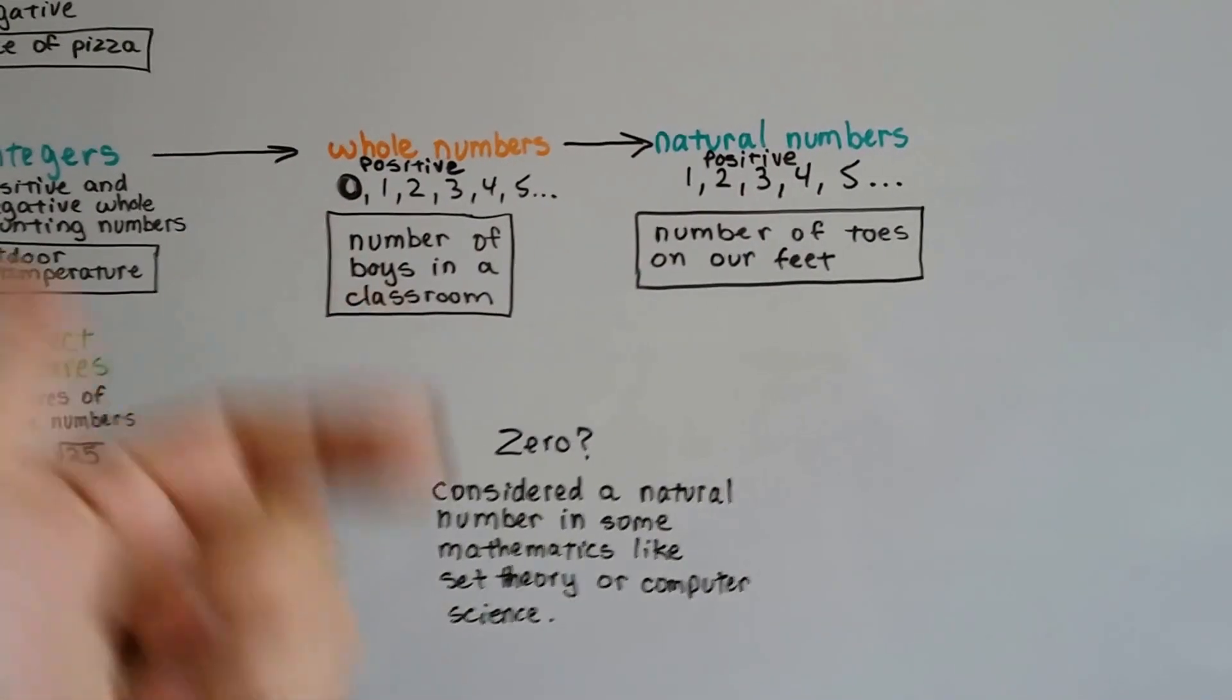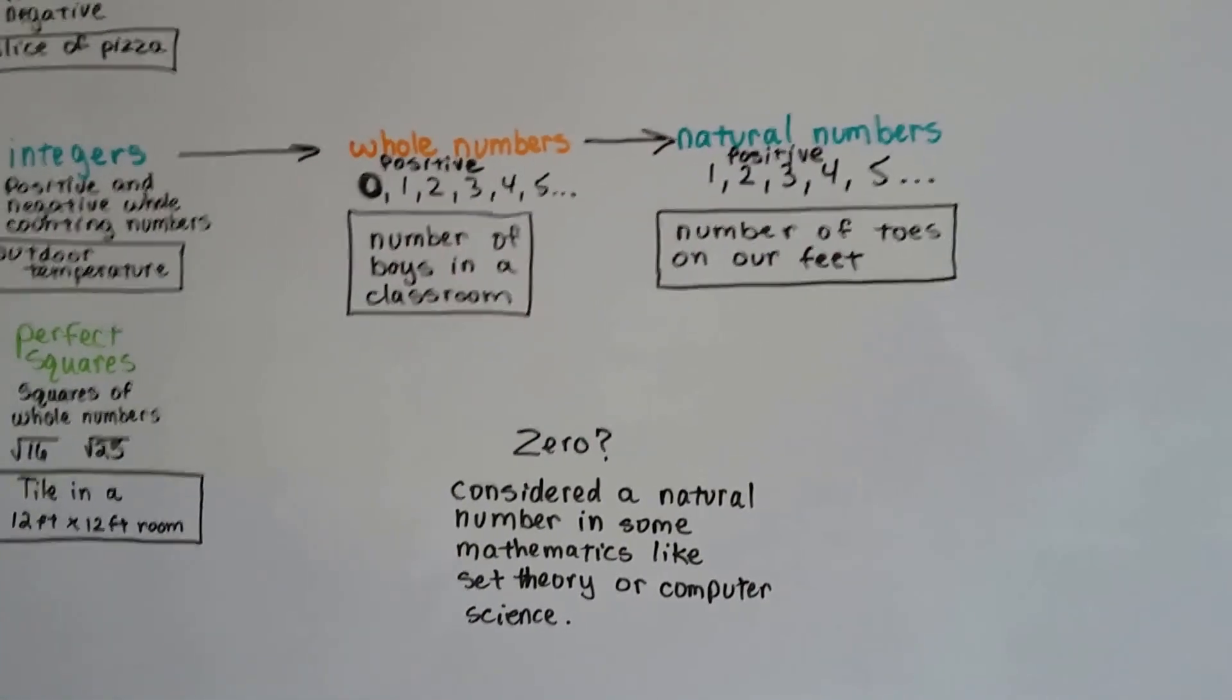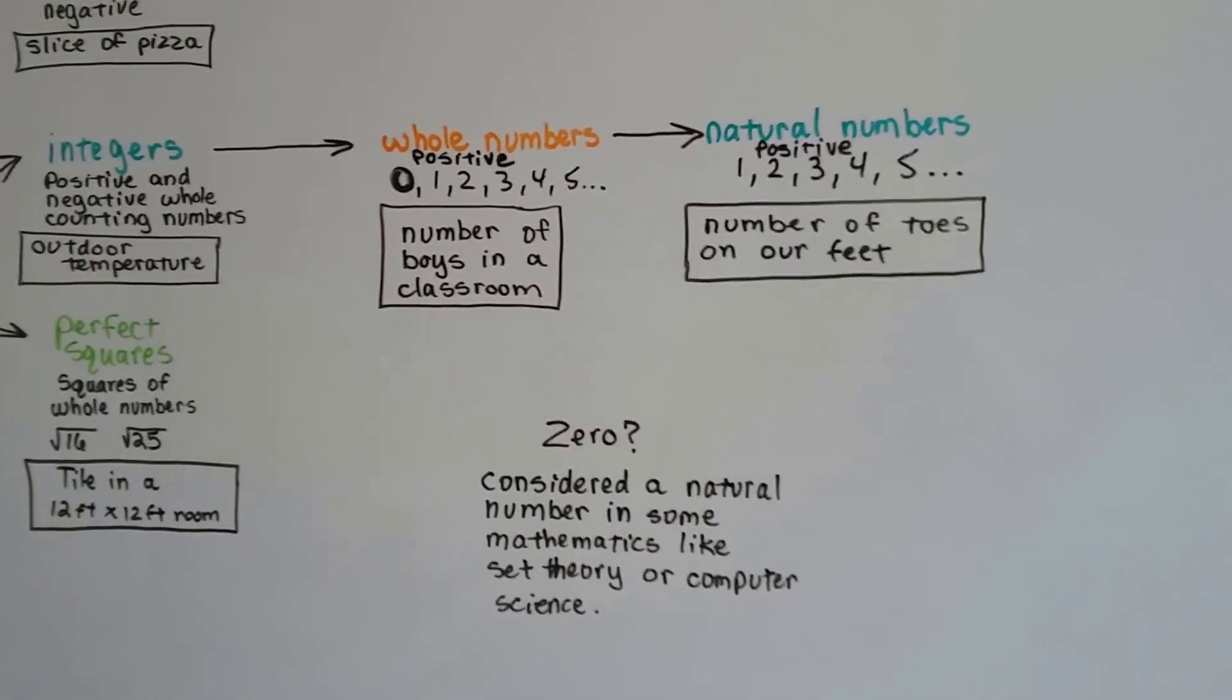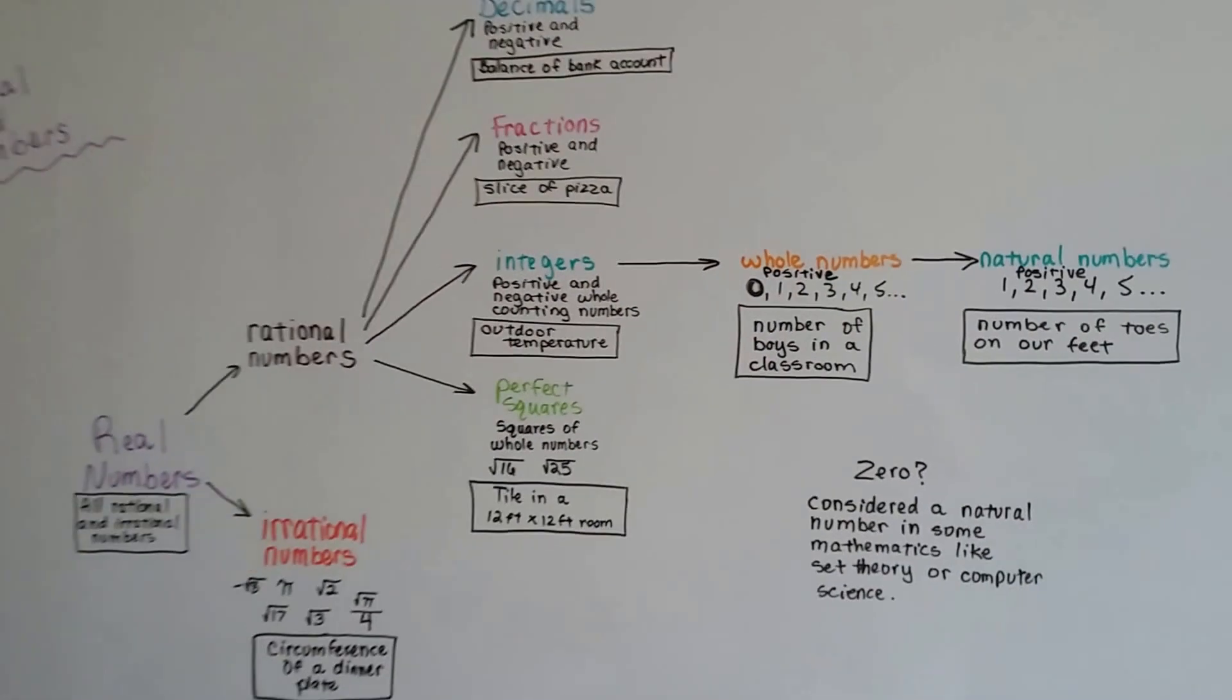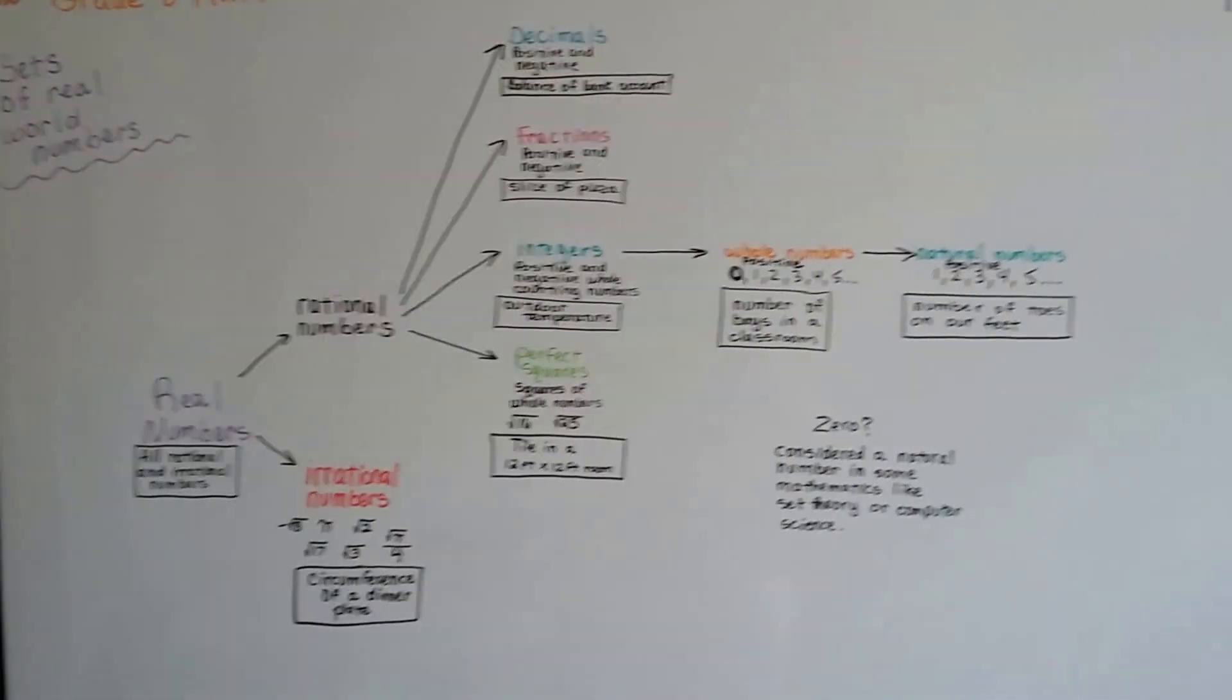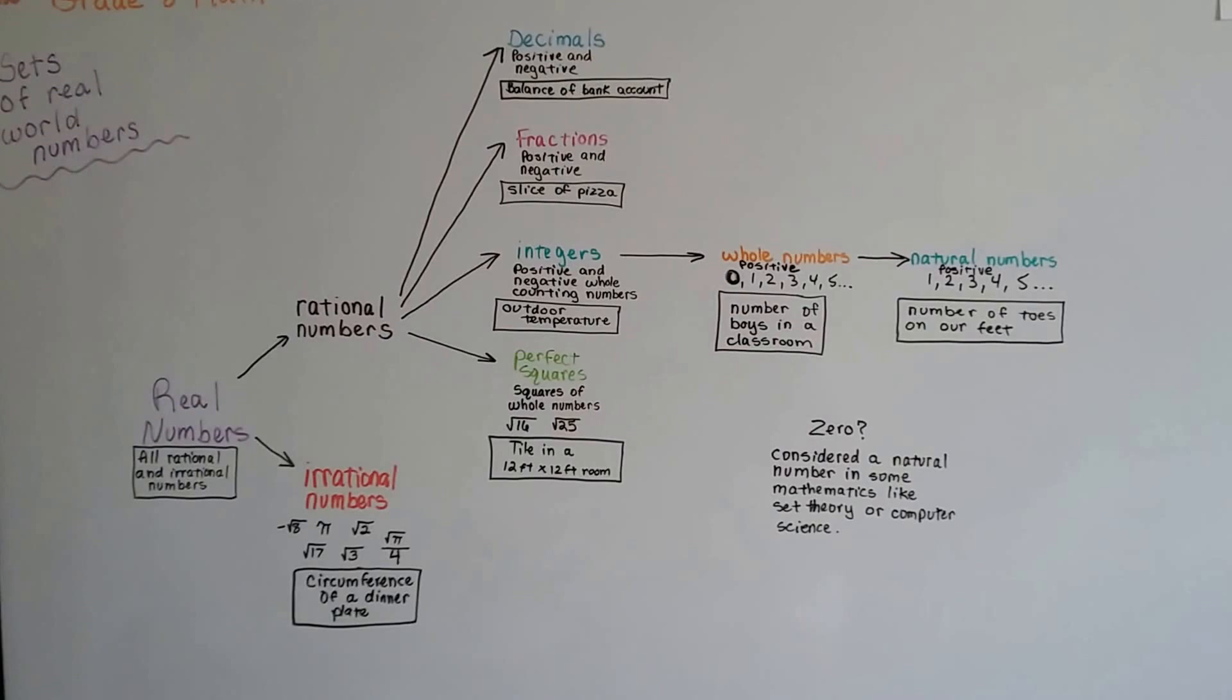So you can put it here and not worry about getting it marked wrong unless you're in a computer science class. So those are the sets of real world numbers and how they're grouped and the sets that they're in.